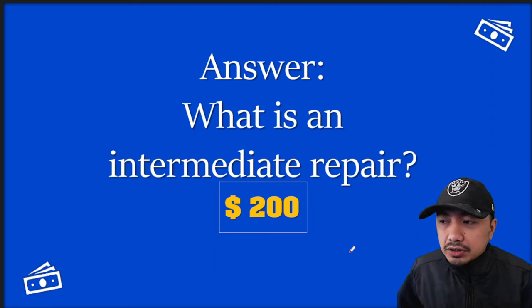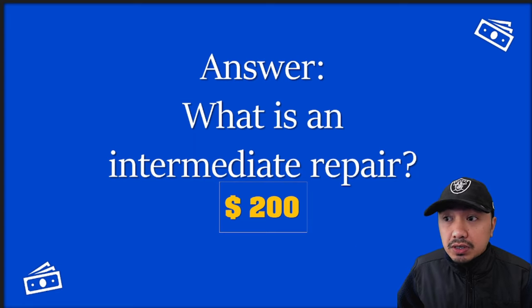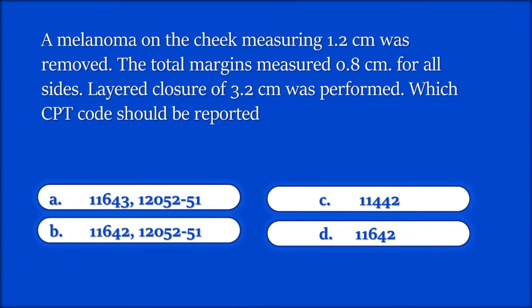We'll now proceed to the next question for $400. A melanoma on the cheek measuring 1.2 centimeters was removed. The total margins measured 0.8 centimeters for all sides. Layered closure of 3.2 cm was performed. Which CPT code should be reported? Timer starts now.